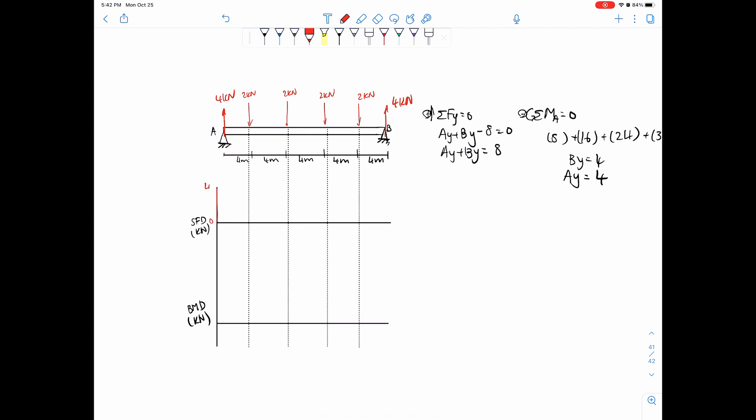Go up four, just follow the loads. If it's going up, go up, and since there's nothing acting in between, it's a continuous flat line. Then we go down by two since this is a downward force. Nothing in between, go down by two again. Nothing in between, go down another two. Nothing in between, go down another two, and finally the last force goes up back to zero.